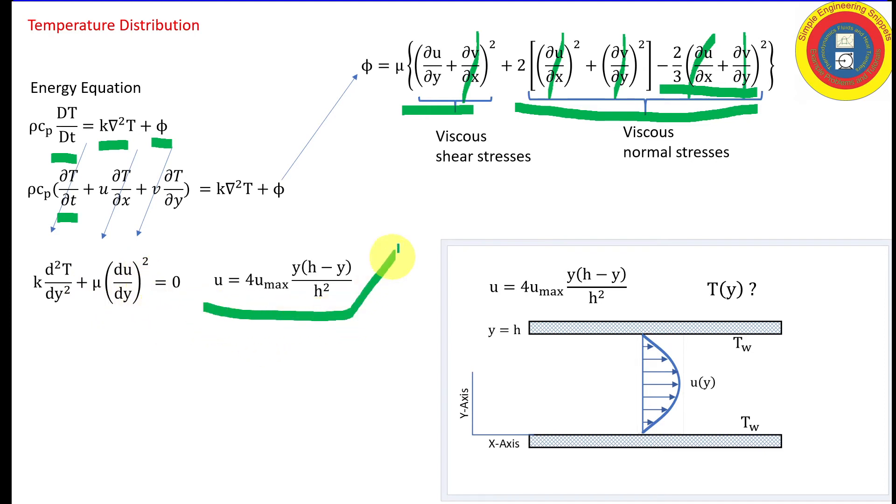All right. So just as a reminder, this is our equation for the x component of velocity. I'm going to substitute that in, take the derivative and square it, and we're going to integrate this twice and solve for a temperature distribution with respect to y.